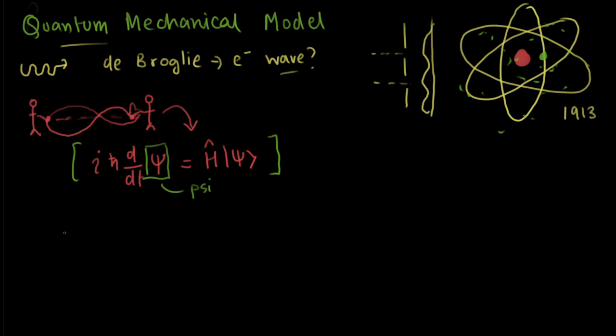And this we know from Max Born. He said that the square of the absolute value of our psi is our probability density. Here is where we can see where electrons are.